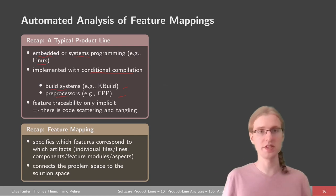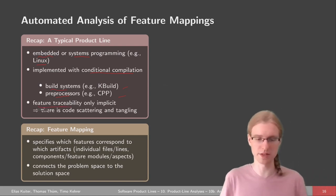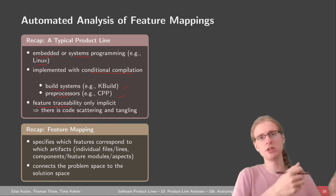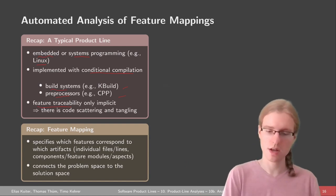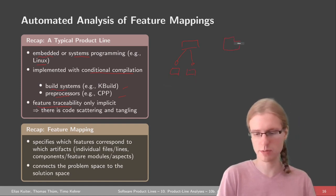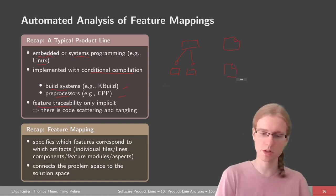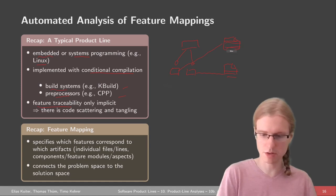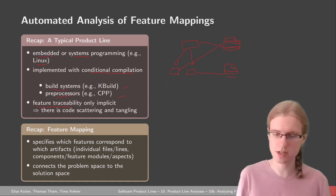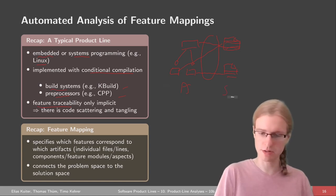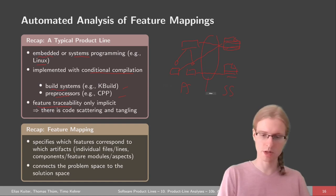The typical problem with these kinds of implementation techniques is that the feature traceability is only implicit. Feature traceability is about tracing back our features from the feature model into the implementation, or the other way around. Typically you have a feature model with optional features, and these features might be associated with some C or C++ files. The feature mapping is basically these arrows between the feature model — the problem space — and the implementation, the solution space.